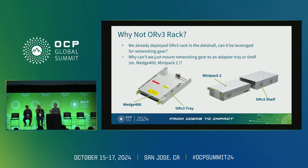You may be thinking, why do we just not use ORV3? That's certainly something we looked at. We could certainly take our network switches and put them in a tray — we've got a good history of doing that with our top-of-rack switch, some of the RTSW Minipack 2s we put in our Grand Teton. That was something we could look at, but it presents a couple of unique challenges: one is around the bus bar, and one is around cabling.